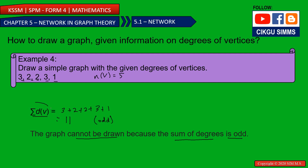You won't have a valid graph when the sum of degrees is odd, because every edge has two endpoints, so the sum of degrees is always even. If you find the sum is odd, it is impossible to draw the graph. So for example 4, the graph cannot be drawn — this is a special case.